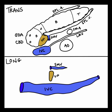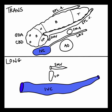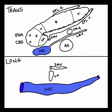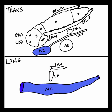Starting with the uncinate process: if you can identify the inferior vena cava and the superior mesenteric vein, you should have the uncinate process in between. These landmarks also work in the longitudinal plane. When the IVC is lengthened out, the short axis of the uncinate process will be just anterior to it.